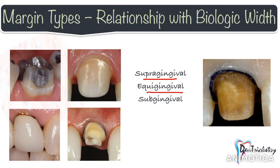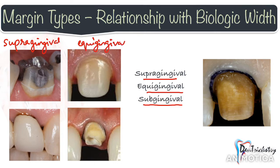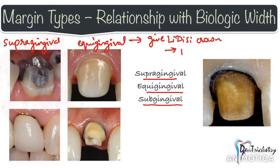Whenever you're giving a crown, you have to first decide whether you want your margins to be placed supra-gingivally, equi-gingivally, or sub-gingivally. The safest options are supra-gingival or equi-gingival — in such cases biologic width does not come into picture at all. These days you have amazing options for lifelike crowns; if your tooth is not discolored or majorly damaged, you can give a lithium disilicate crown with supra-gingival or equi-gingival margins that can completely blend with the tooth. From a periodontal viewpoint, both are very well tolerated and concerns over biologic width do not exist.